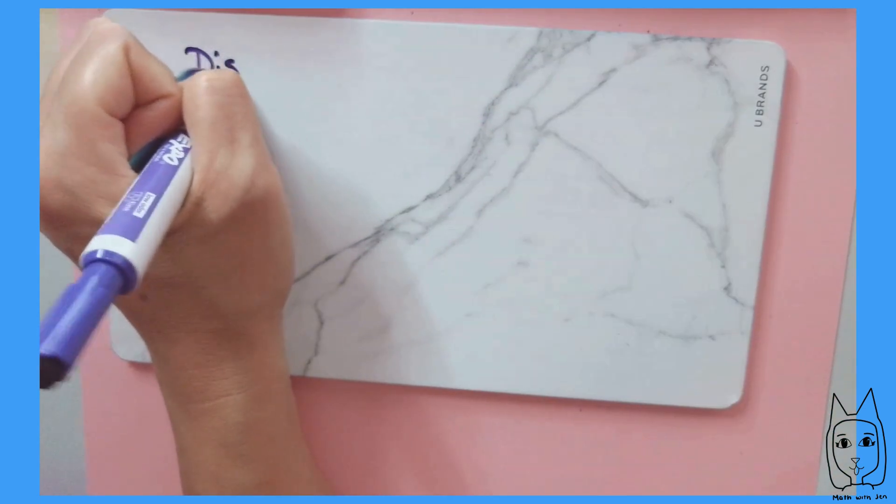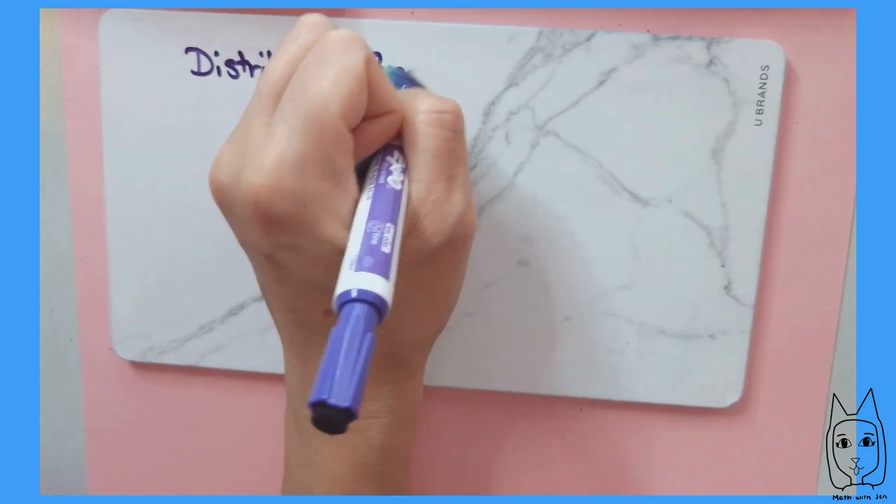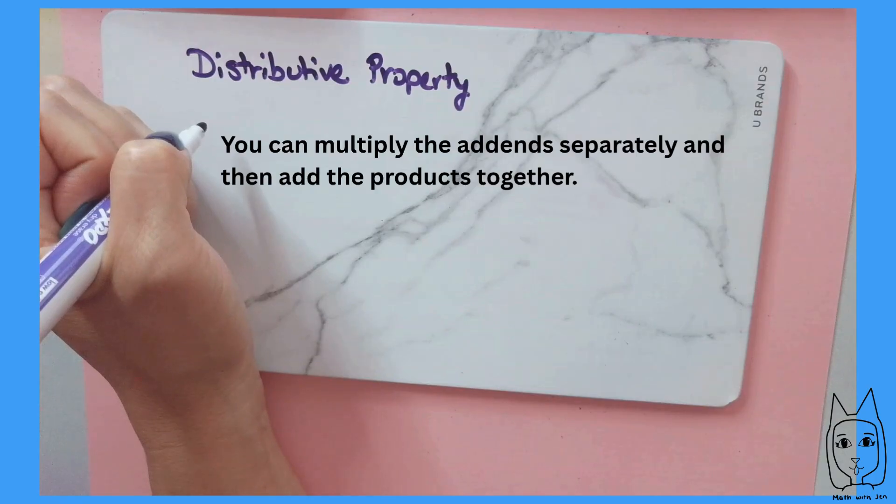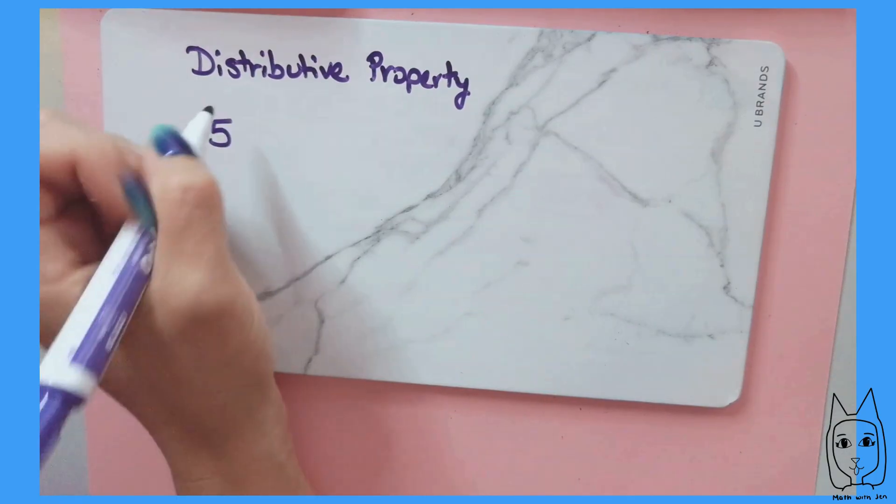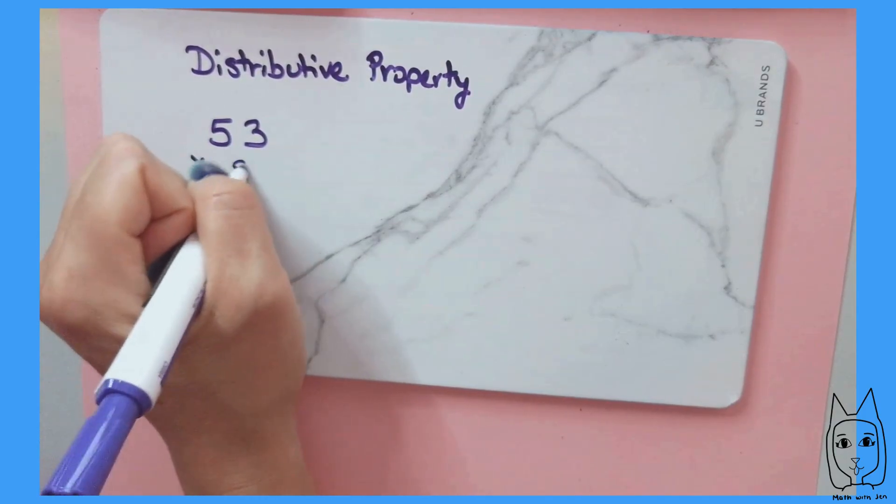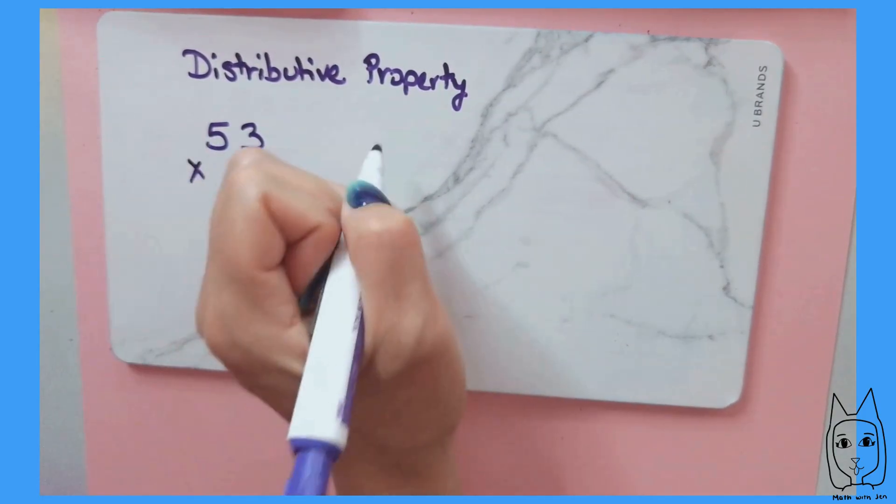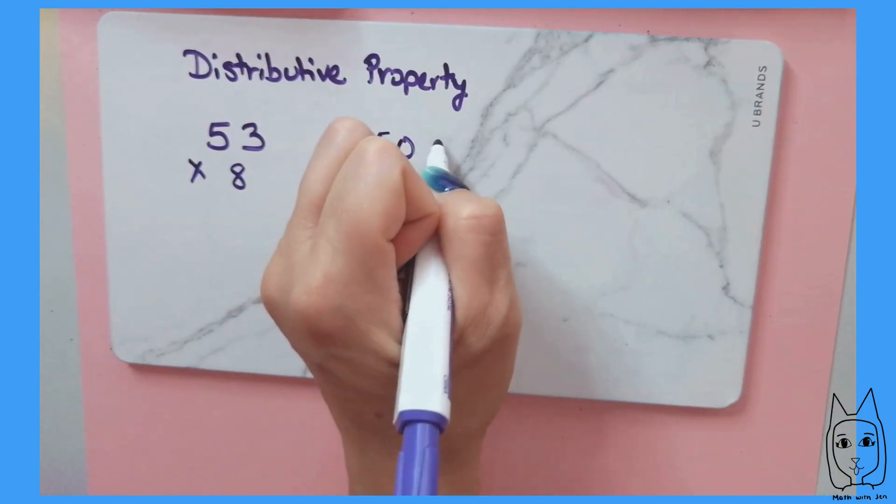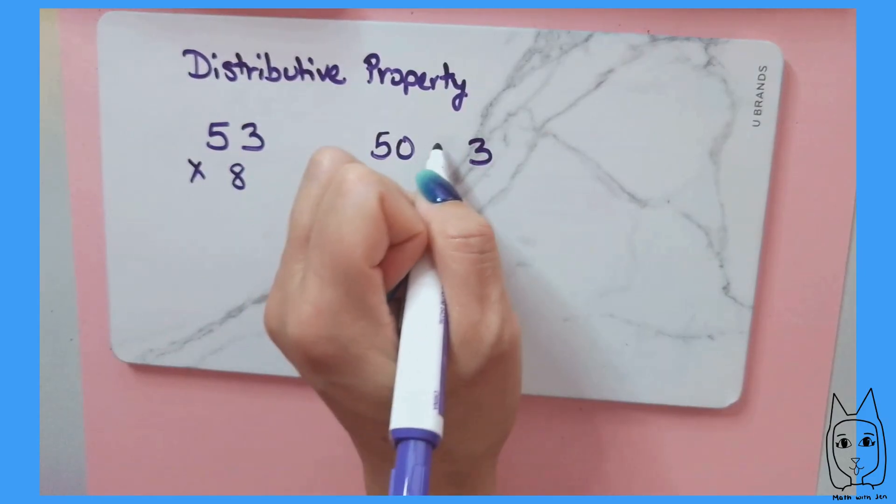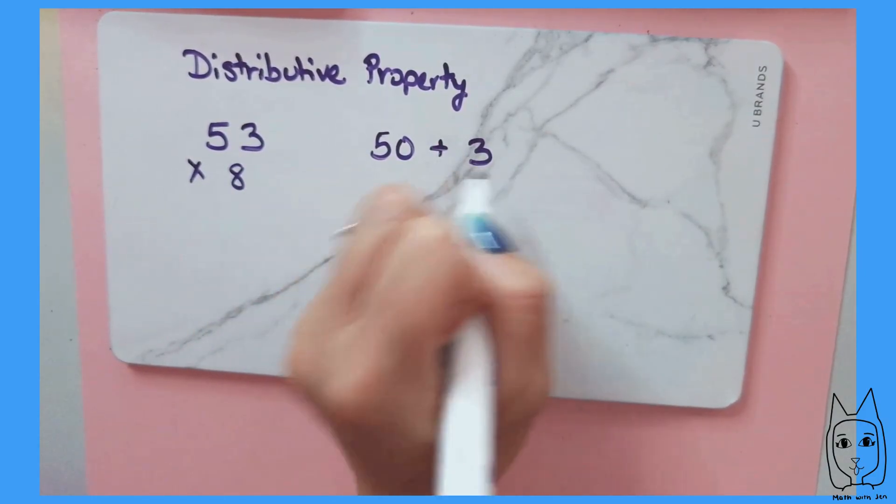Distributive property is when you take a multiplier and you distribute it to addends of that number you're multiplying by. If we had 53 times 8, I could break up the 50 and the 3 into as many parts as I want. I'm just going to break it up into 50 and 3 for two addends. 50 plus 3 is 53.